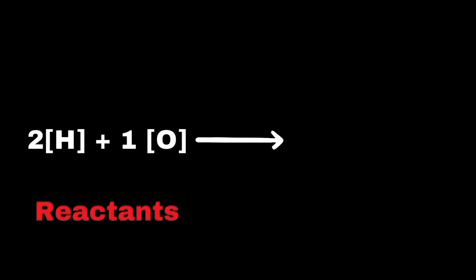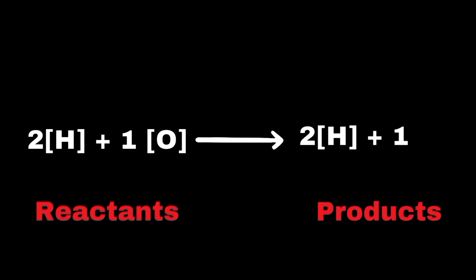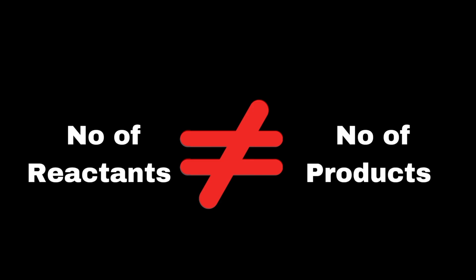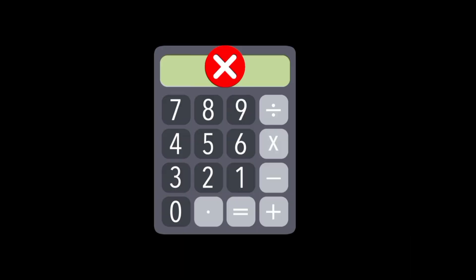For example, if you have two hydrogen atoms and one oxygen atom in the reactants, you must also have two hydrogen atoms and one oxygen atom in the products. Without a balanced equation, the relationships between reactants and products would be incorrect, leading to wrong calculations and possibly failed experiments.